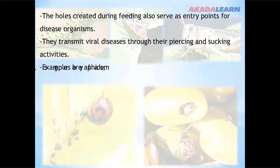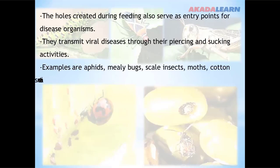Examples of piercing and sucking insect pests are aphids, mealybugs, scale insects, moths, cotton stainers, whiteflies, thrips, capsids, and many more.